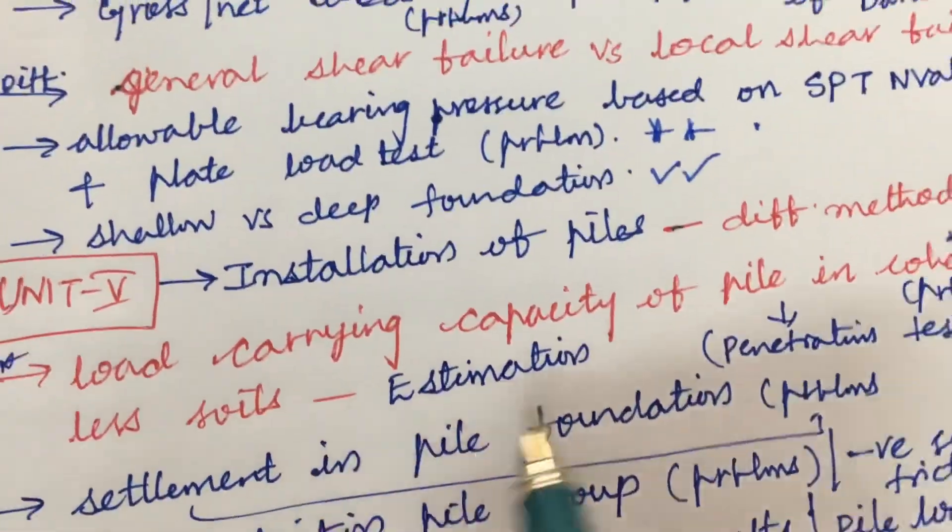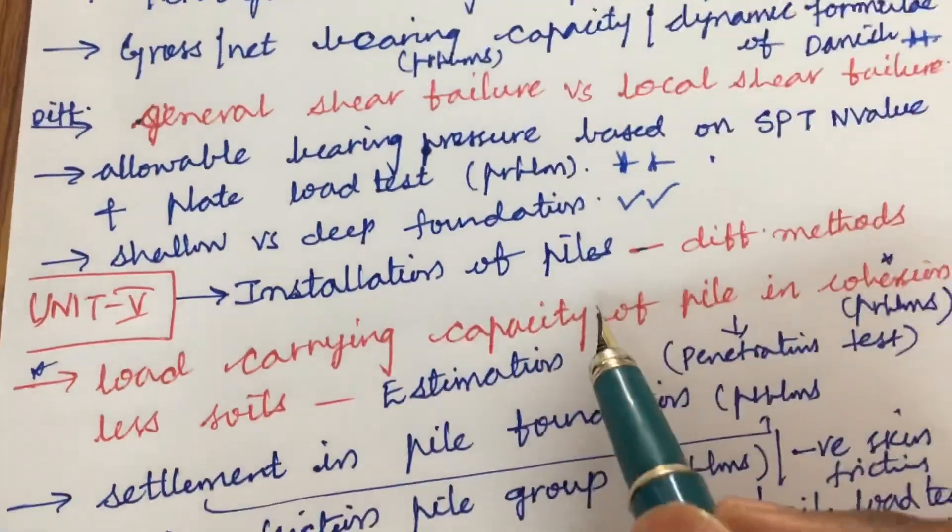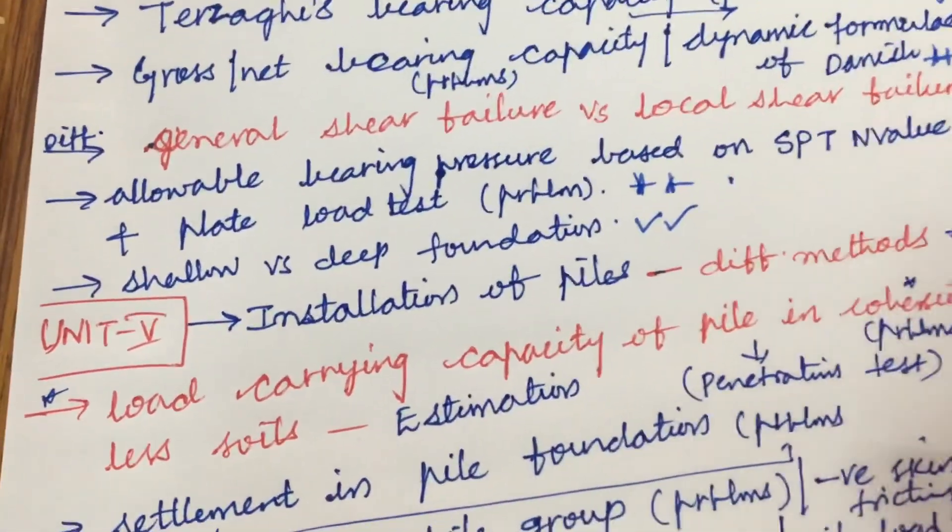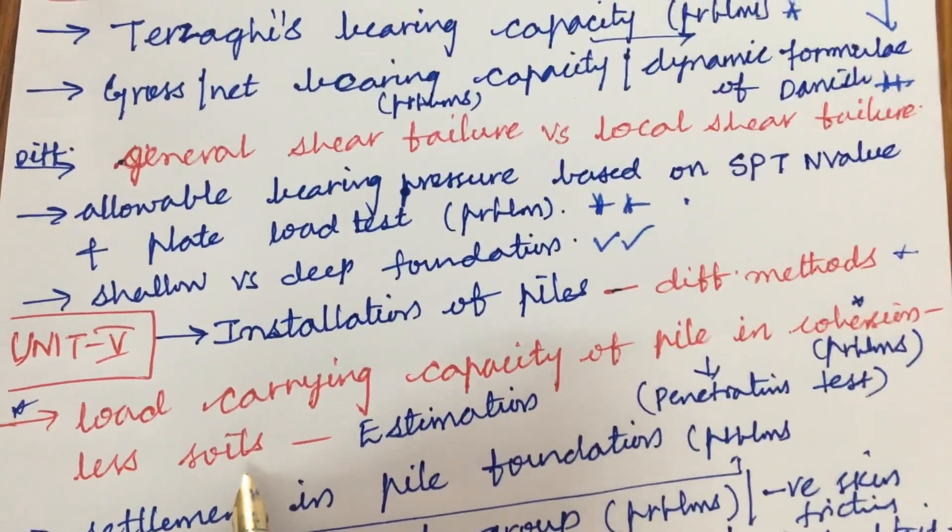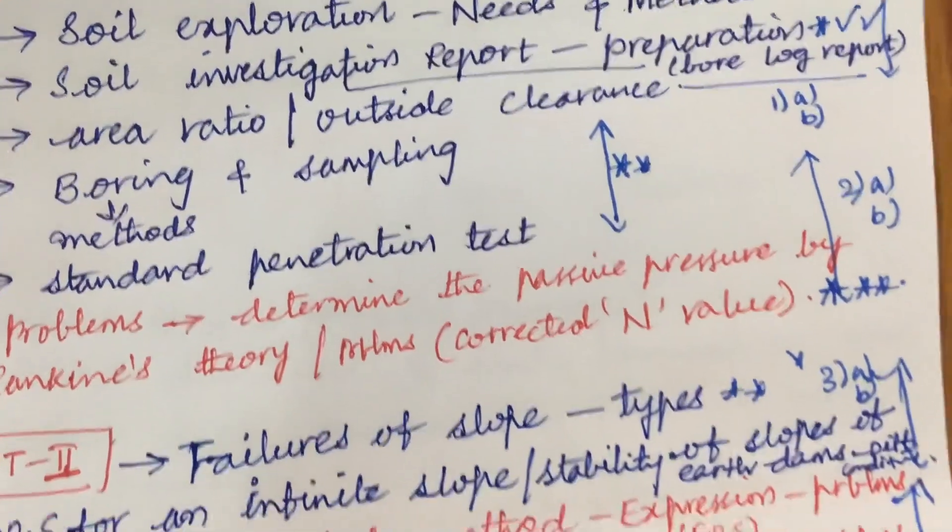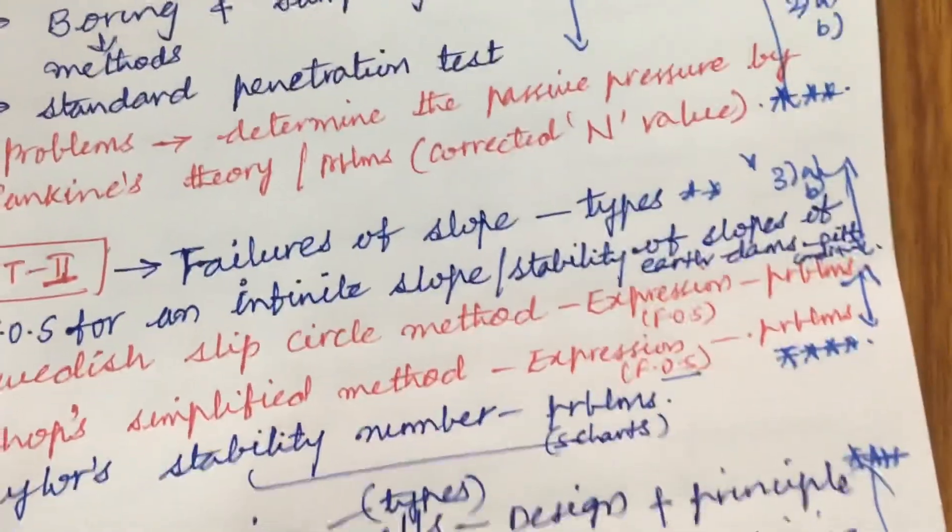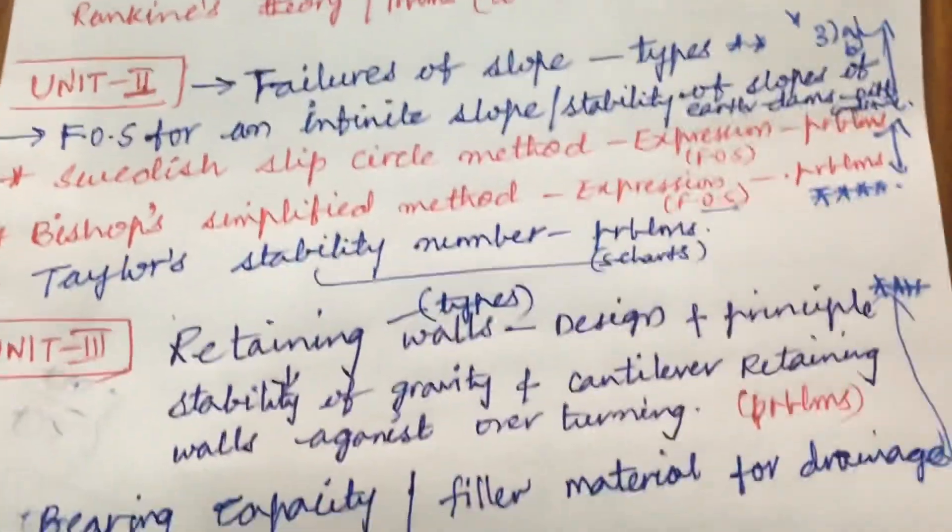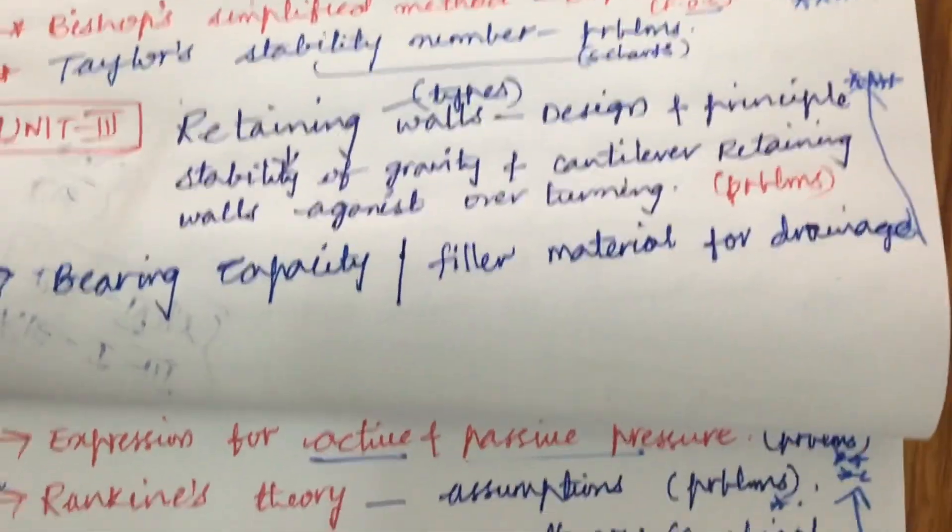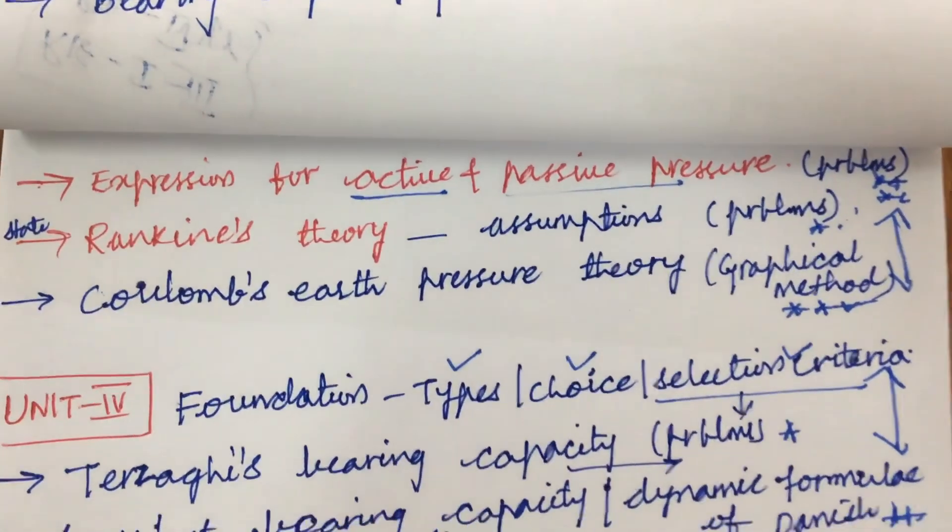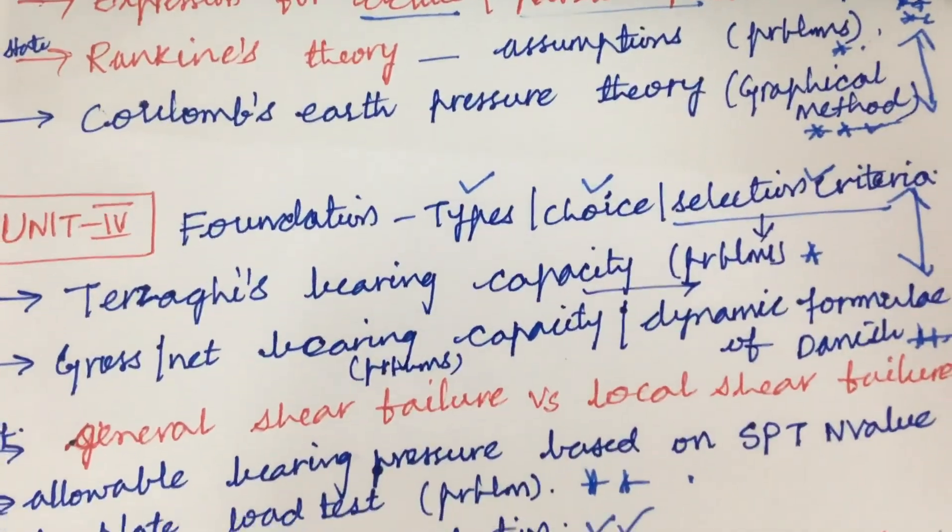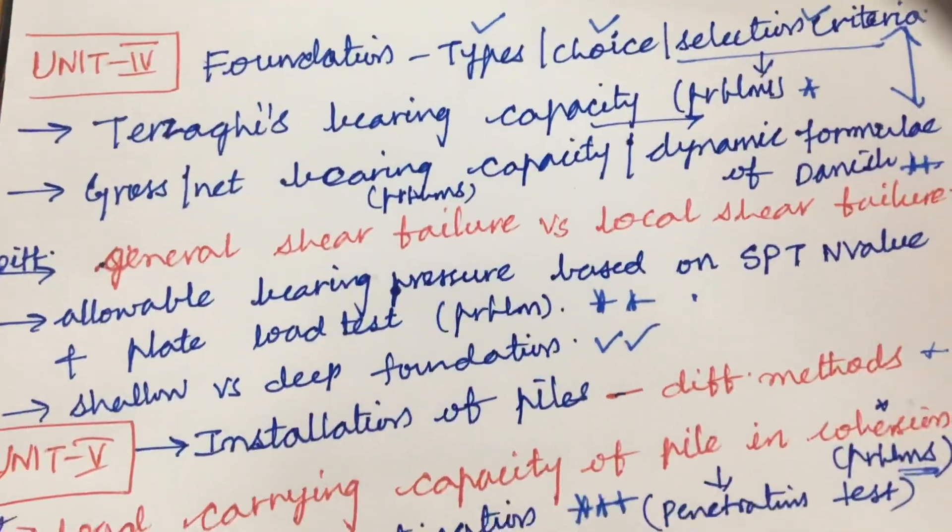Later, the fifth unit is all about the piles installation of piles and its different methods, as well as load carrying capacity of a pile in cohesionless soils - the remaining 50 percent to be problems. Make sure to work out accordingly and score better marks. Do not forget to carry your calculator as well as write your answers only in point wise and do not make them in paragraph to score a better mark.